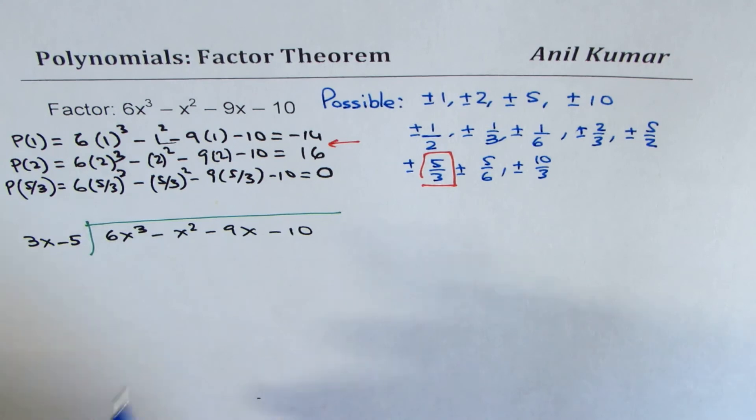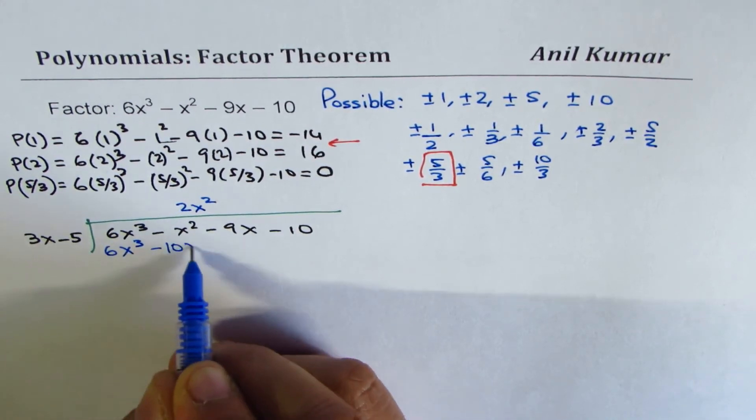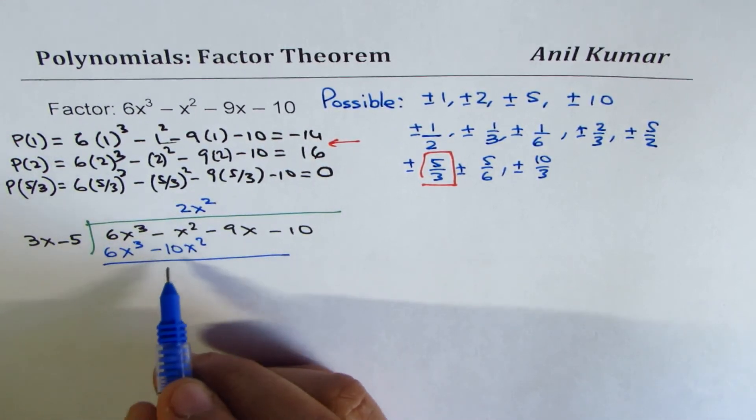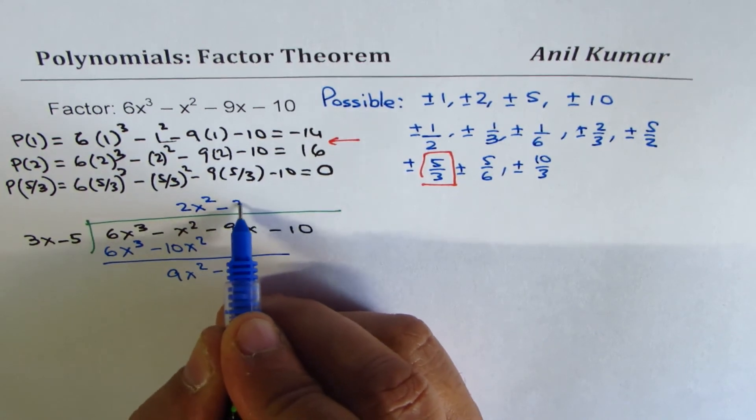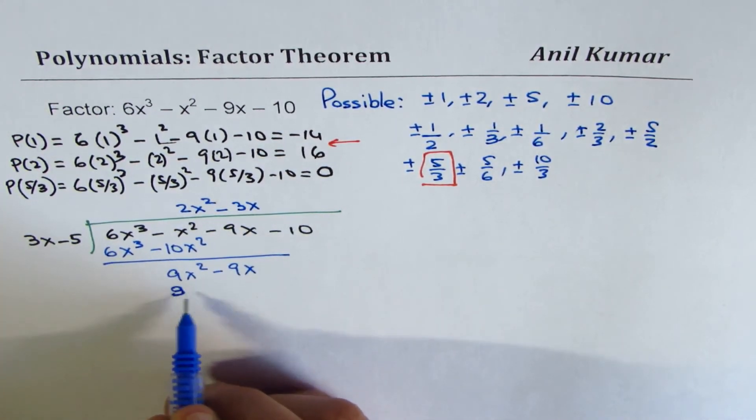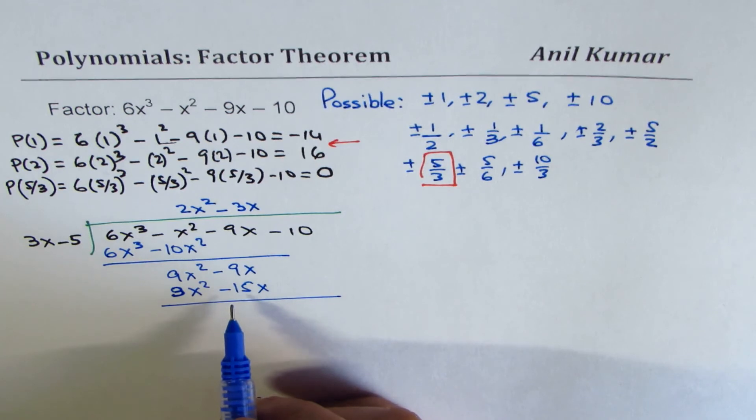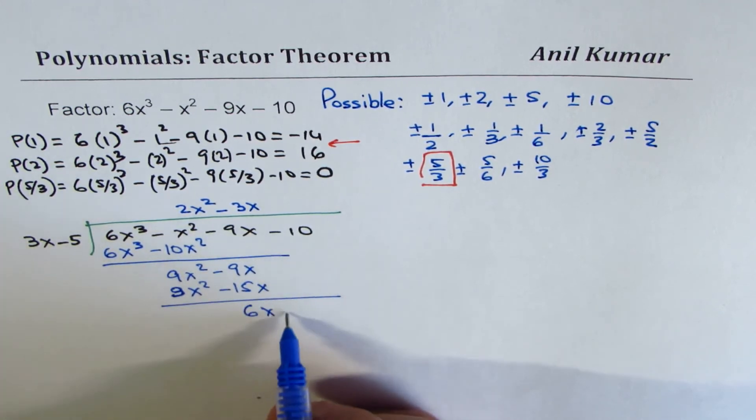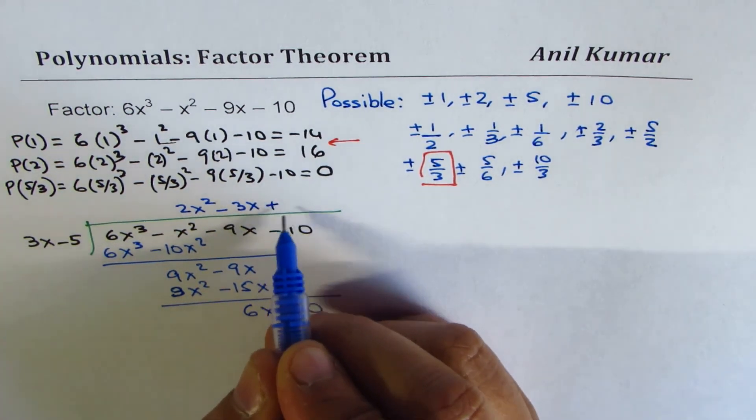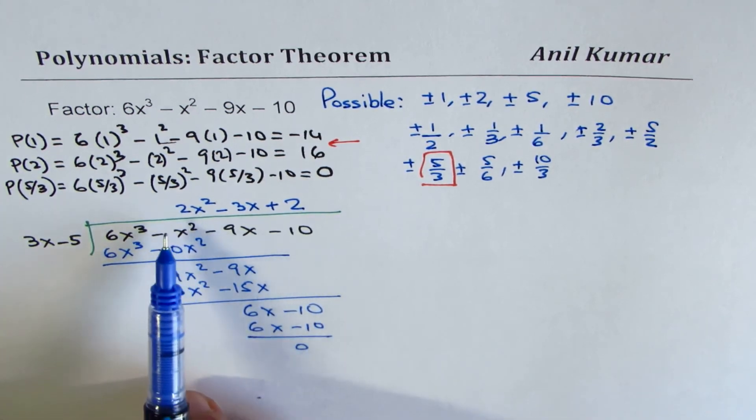You're taking care of the first two terms. We'll multiply by 2x². So we get 6x³ - 10x². When you take away, you get 9x² - 9x. So 3 times 3 is 9, so we get 3x. That gives you 9x² - 15x. And this gives you, if you take away that from here, 15 take away 9, you get a positive number. That is 6x and bring down -10. Plus 2 gives us 6x - 10. The remainder is 0.